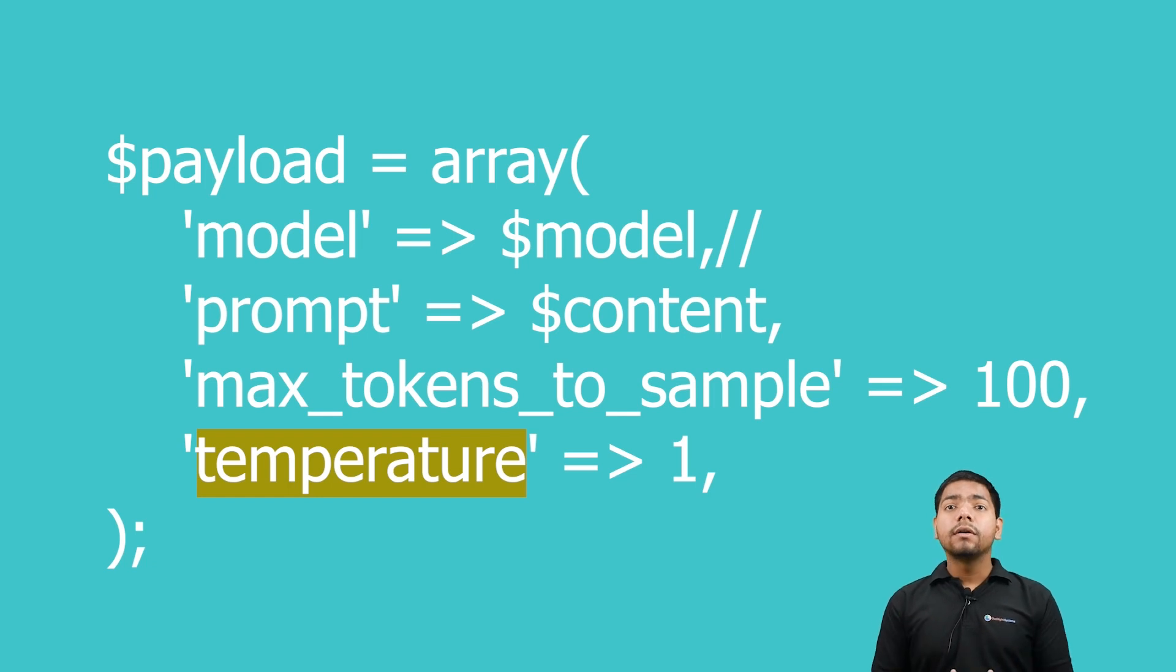Lower temperatures result in more dramatic outputs, while higher temperatures introduce more randomness. Here, the temperature of 1 is a neutral setting, balancing predictability and creativity in the generated text.